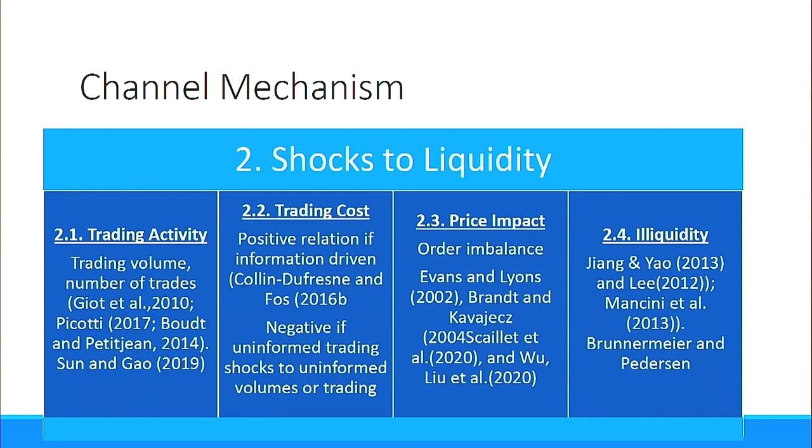The second channel mechanism studied was shocks to liquidity, defined in three ways: trading activity, trading cost, and price impact, plus illiquidity. Trading activity covers volumes and depth; trading cost covers bid-ask spread, proportional spreads, and effective spreads; price impact is order volume — bid size minus ask size representing buy-side vs. sell-side; and illiquidity is measured using Amihud's definition of loss of liquidity in the markets.